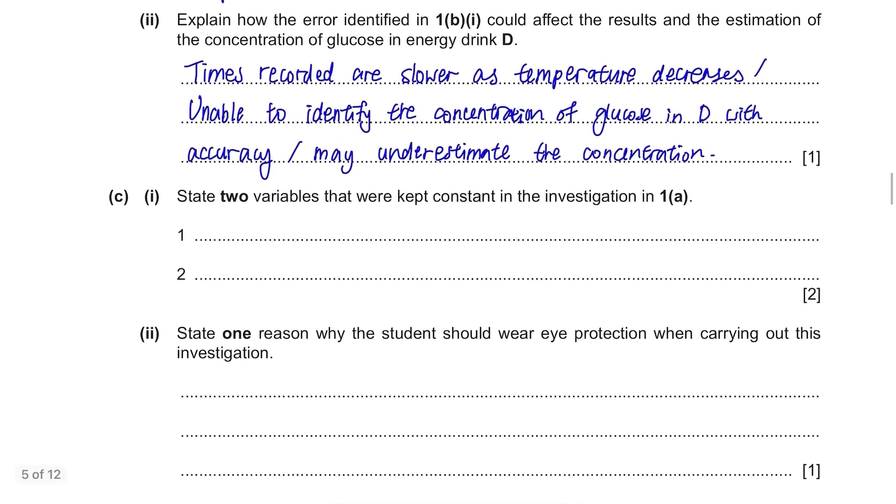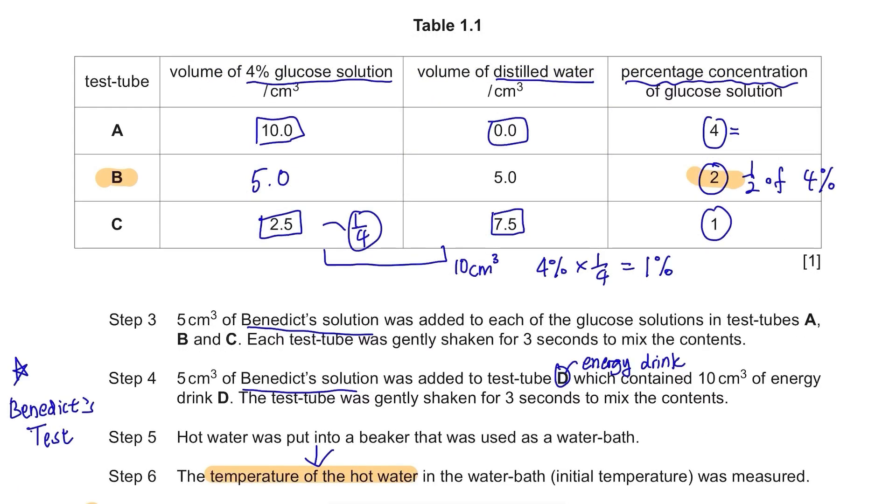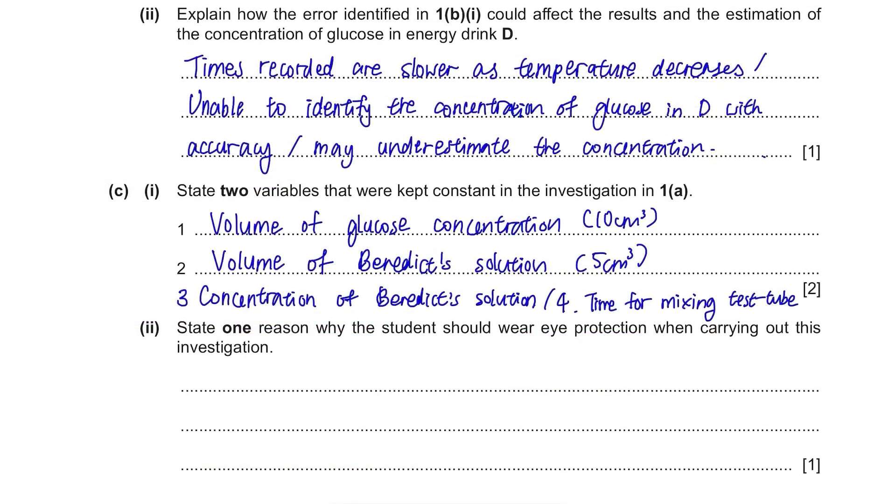State two variables that were kept constant in the investigation. What was kept the same for all test tubes? From this table, we can see that the volume of glucose solution was always 10 cm³, so that's 1. Also in steps 3 and 4, the volume of Benedict's solution added were all 5 cm³. Although not given here, the concentration must have been equal in order to carry out a fairer experiment. And the test tubes were mixed for 3 seconds and this can also be another point. You just need to write two points.